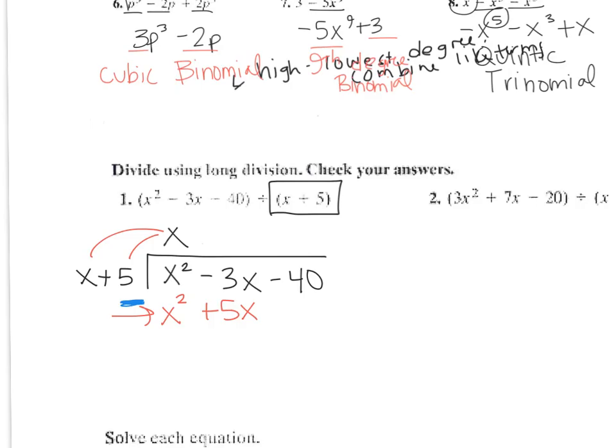At this point, you subtract these two. So x squared minus x squared cancels out. Negative 3x minus 5x is negative 8x. Then you bring down the negative 40.